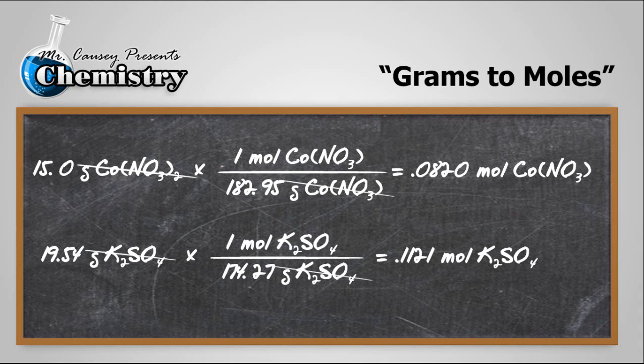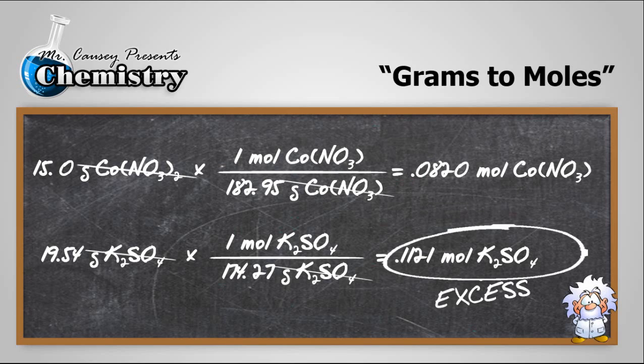Now, you'll notice we used less cobalt 2 nitrate than we did potassium sulfate. Therefore, cobalt 2 nitrate is the limiting reactant. And of course, then there's going to be extra potassium sulfate, so it's our excess reactant.